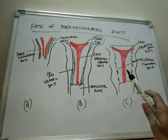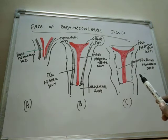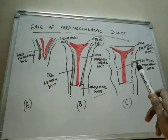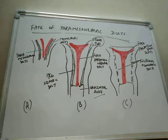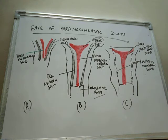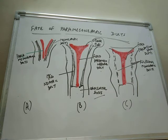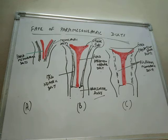Regarding the vagina, the endodermal cells of the urogenital sinus proliferate to form two swellings called sinovaginal bulbs, which fuse to form one mass. Most of the vaginal plate is formed from the sinovaginal bulbs. This completes the fate of paramesonephric ducts in females.